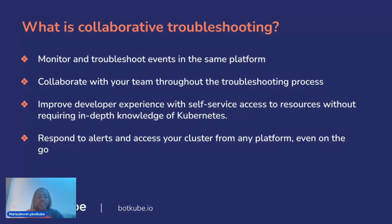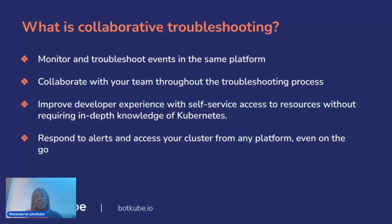For example, if your app goes down, your developer may not understand how to navigate Kubernetes in the terminal. But if you're able to give them access in a Slack channel, you can get the problem solved fairly easily without requiring them to learn the intricacies of Kubernetes. And because alerts are synced into communication platforms like Slack, Discord, Mattermost, and Teams, you're able to have access to your alerts from any platform, anywhere you go — even from your phone, which is great for on-call teams.